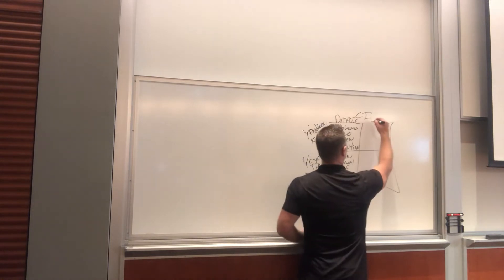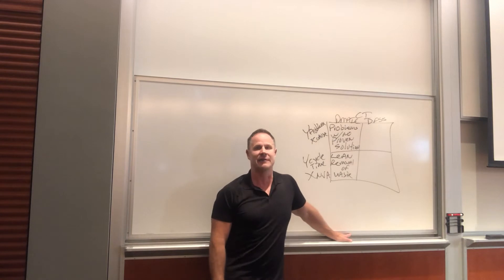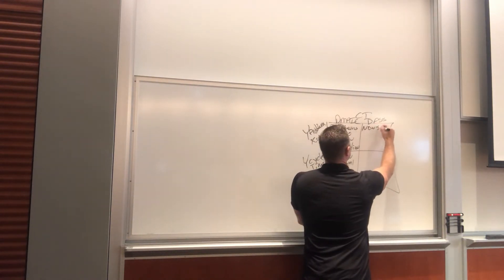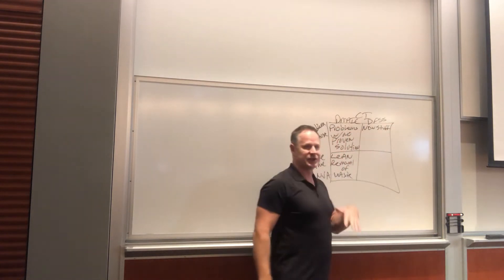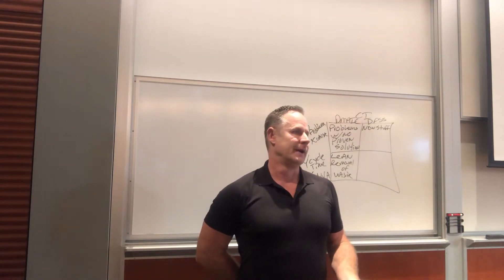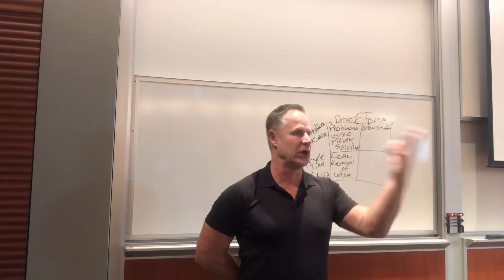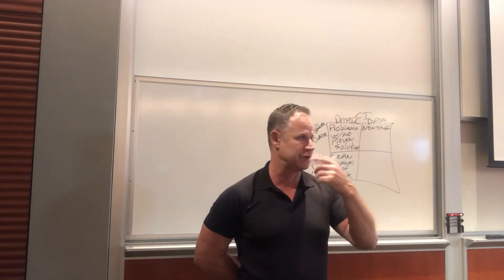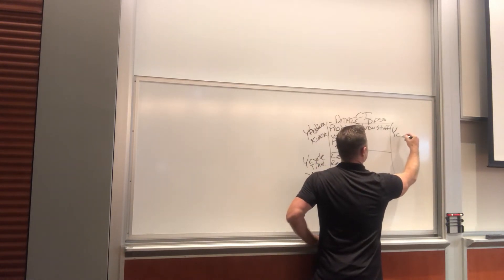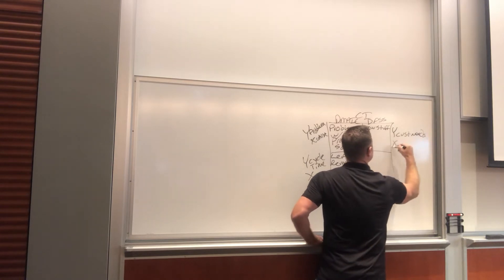What we're going to cover the first couple of days this week is Design for Six Sigma — and that is for creating new stuff. Think of verbs: what are you making, buying, building? That's what Design for Six Sigma is for. The Y for Design for Six Sigma is the customer needs, and the X is the solution.